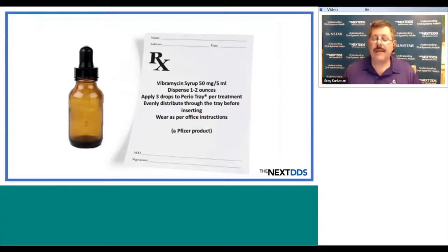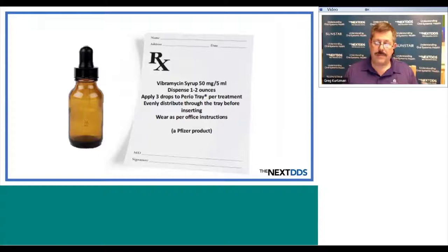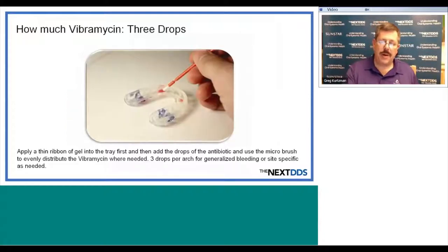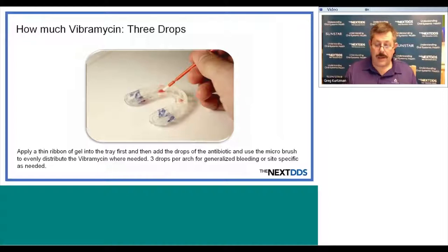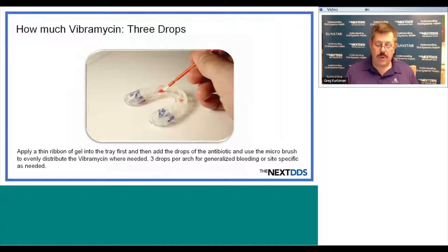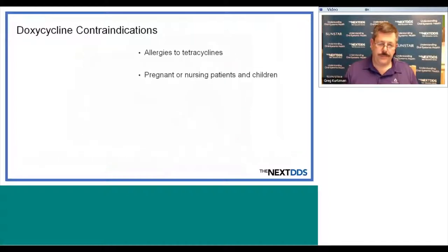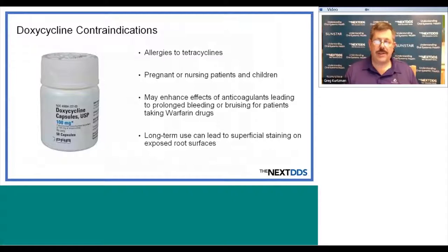When doing this, we give the patient a prescription for vibromycin syrup, 50 milligrams per 5 milliliters, dispense one to two ounces. They apply three drops into the perio tray per treatment — one in each posterior quad and one in the anterior — and use a Q-tip to distribute it in the periogel, then wear the tray. We use this when we have generalized bleeding or it's just not responding to treatment as well as we'd like. Contraindications include allergy to tetracycline, pregnancy or nursing, and it may enhance effects of anticoagulants, leading to prolonged bleeding for patients on warfarin drugs. Long-term use can lead to superficial staining on exposed root surfaces.